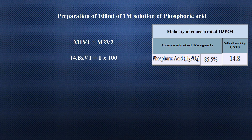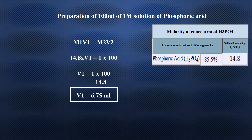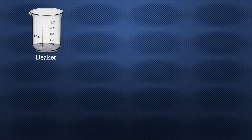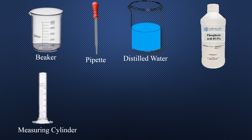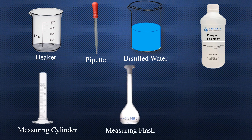If you want to prepare 250 milliliters, put 250 in V2. If you want to prepare 500 milliliters, put 500 in V2, and so on according to your requirement. After calculations you get a volume of 6.75 milliliters. To prepare 1 molar solution of phosphoric acid, the apparatus required are: beaker, pipette, distilled water, phosphoric acid, measuring cylinder, measuring flask, and funnel.